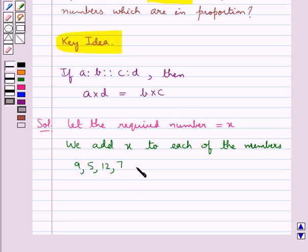12, and 7 such that they are in proportion. So we have (9+X):(5+X)::(12+X):(7+X).